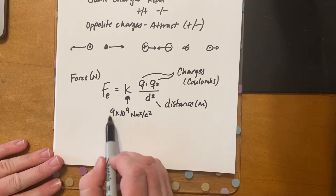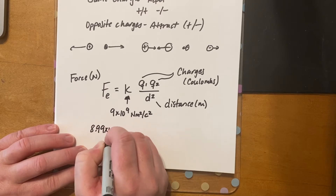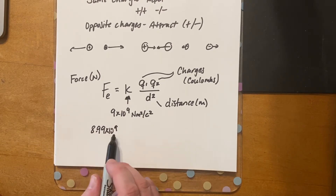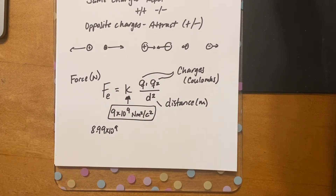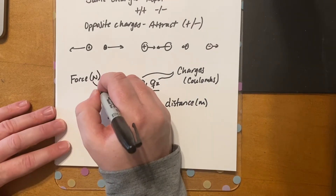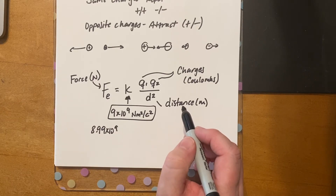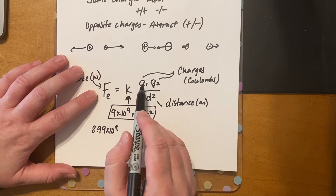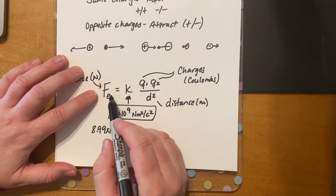Coulomb's constant k equals 9 × 10⁹ N·m²/C². We don't need to worry too much about the units since they cancel out, leaving us with newtons. Sometimes this constant is written as 8.99 × 10⁹, which is close enough that we'll always reference it as 9. The bigger the charges, the bigger the force; if you separate the charges farther, the force goes down.